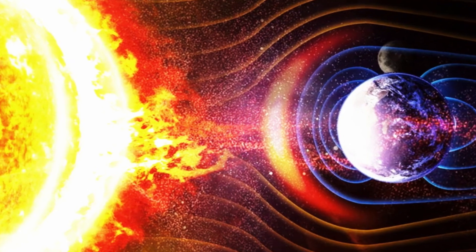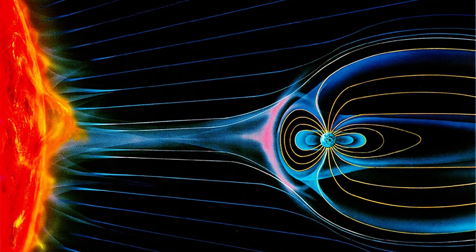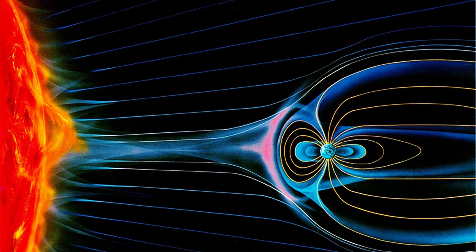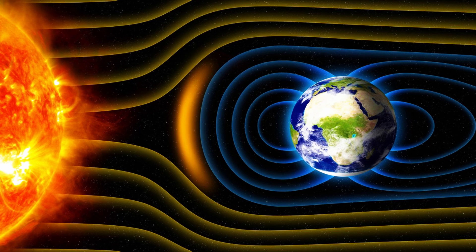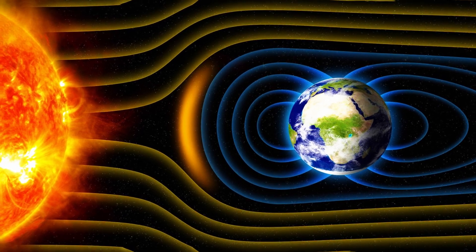While the solar wind flows around the heliopause from within, interstellar plasma does the same from the outside. Observations also help determine the heliosphere shape. On one side, it appears spherical, while on the other, it extends into a long tail.